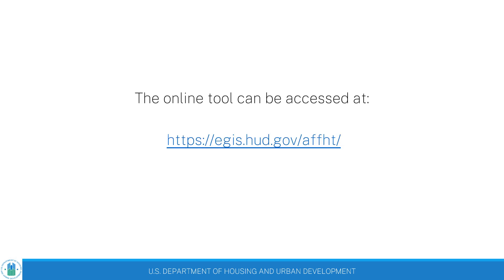The online tool can be accessed at egis.hud.gov/AFFHT. Both the online tool and downloadable data can also be accessed from HUD's Affirmatively Furthering Fair Housing webpage, which is accessible from the HUD.gov homepage by searching for AFFH in the search bar.